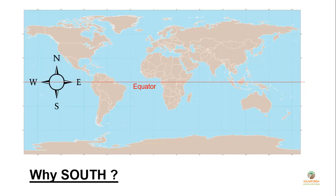You might be thinking, why always south? As you can see on the world map, there is an equator going through the middle of the earth which divides it into two parts: the north hemisphere and the south hemisphere. Since India lies in the north hemisphere, if you are in India and want to see the sun, you have to face south. That's why solar panels in India face the south direction. On the other hand, if you are in Australia, which is in the south hemisphere, solar panels will face north.